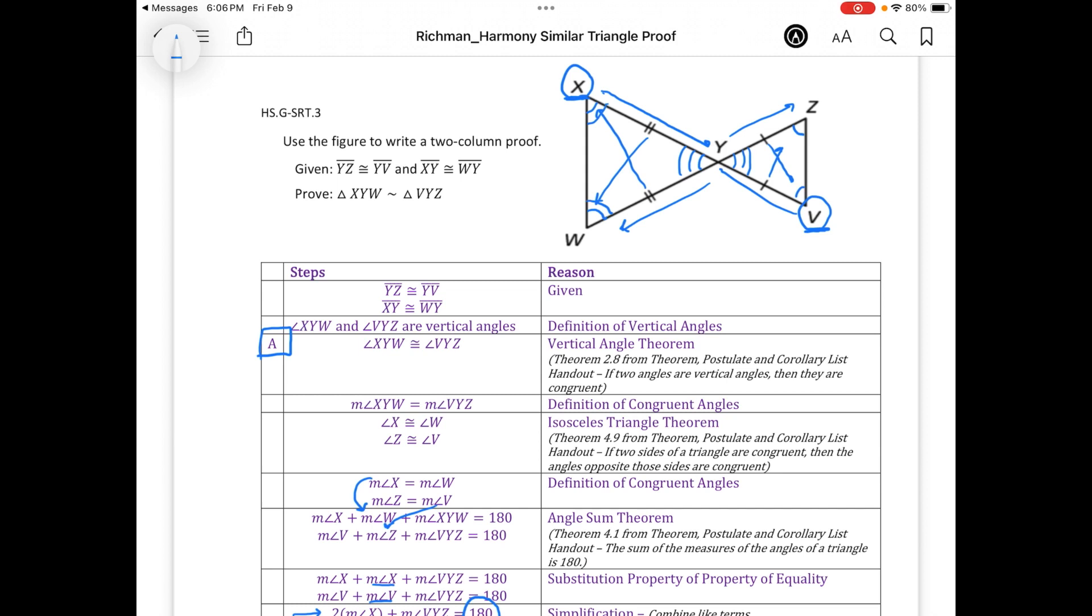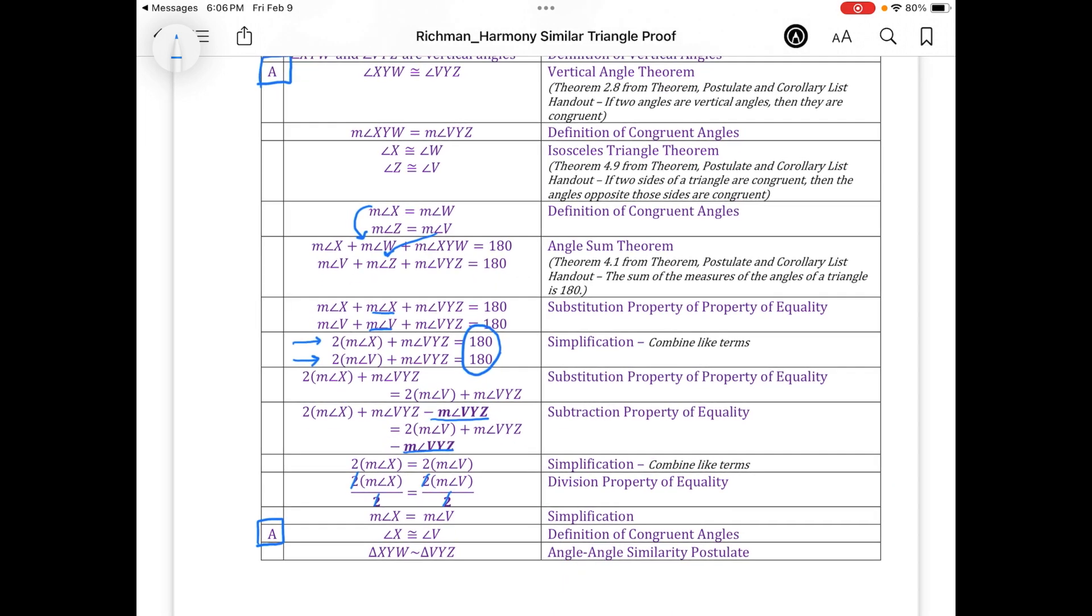We can say that triangle XYW is similar to triangle VYZ. It also goes to show that angle-angle-angle might work here as well, since the measure of angle X is also equal to angle W, and angle W corresponds to angle Z. And that is how I approached this particular proof.